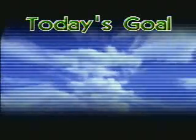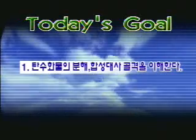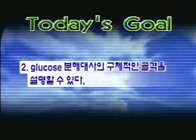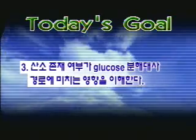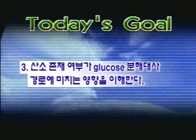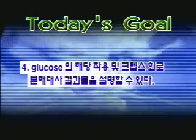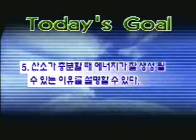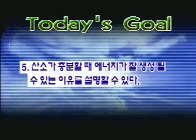이번 시간에는 탄수화물 대사에 대해서 공부하게 되는데요. 첫째, 탄수화물의 분해·합성 대사 골격을 알아야 합니다. 둘째, 글루코스 분해 대사의 구체적인 골격을 설명할 수 있어야 합니다. 셋째, 산소 존재 여부가 글루코스 분해 대사 경로에 미치는 영향을 이해할 수 있어야 합니다. 넷째, 글루코스의 해당 작용 및 크랩스 회로 분해 대사 결과물을 설명할 수 있어야 합니다. 마지막으로, 산소가 충분할 때 에너지가 잘 생성될 수 있는 이유를 설명할 수 있어야 합니다.